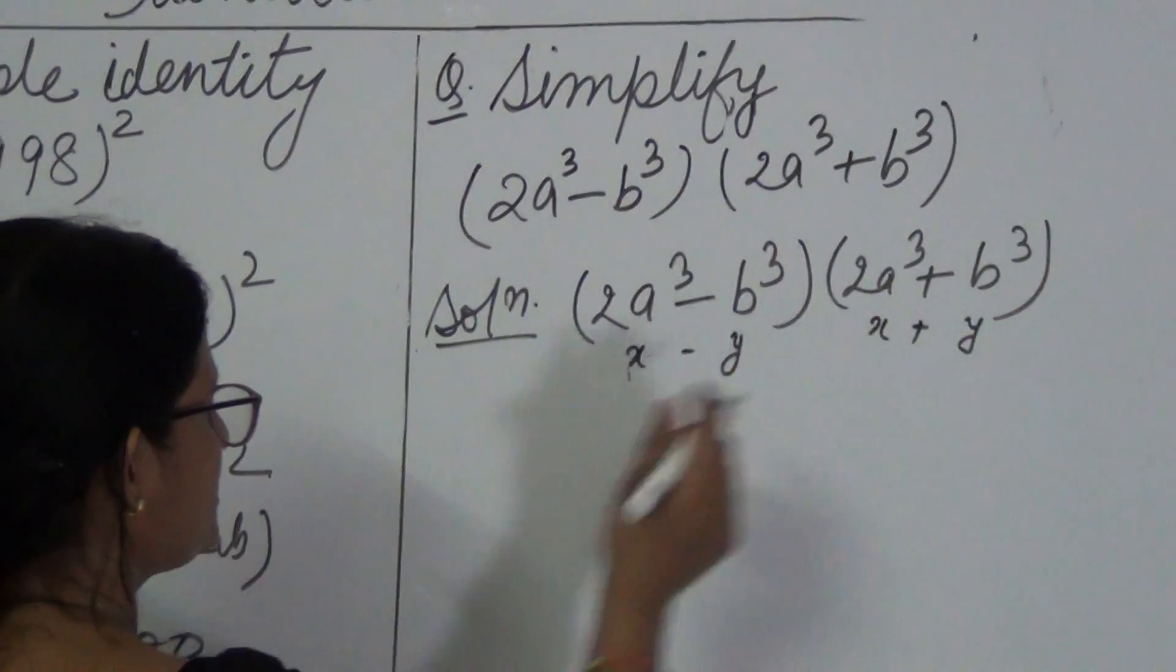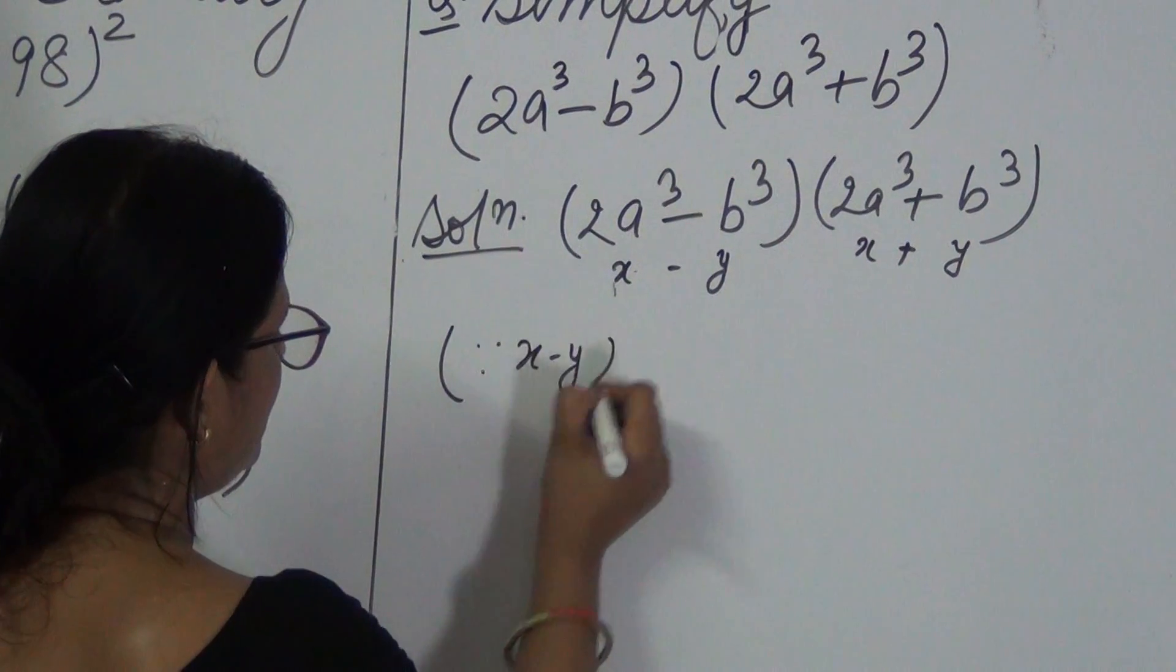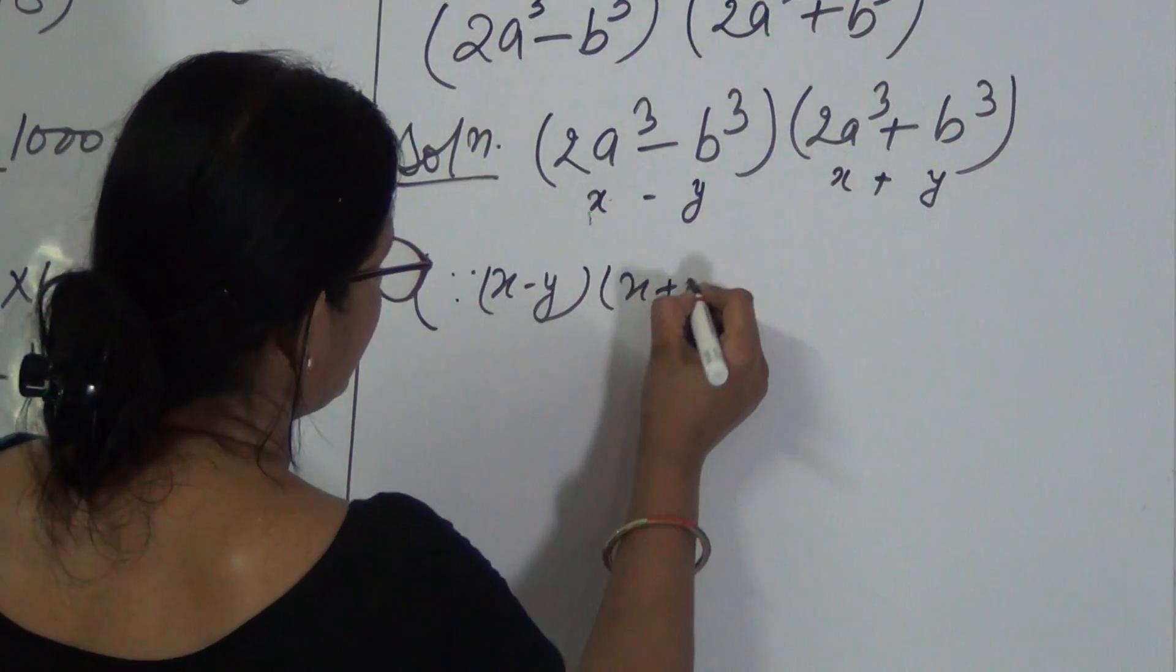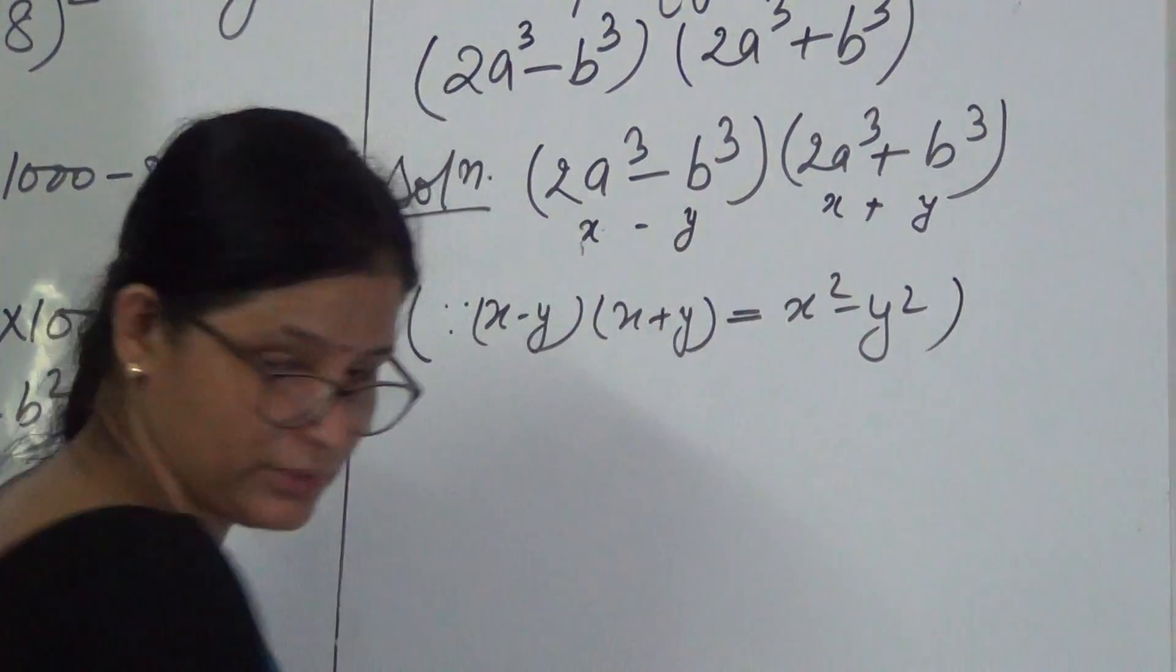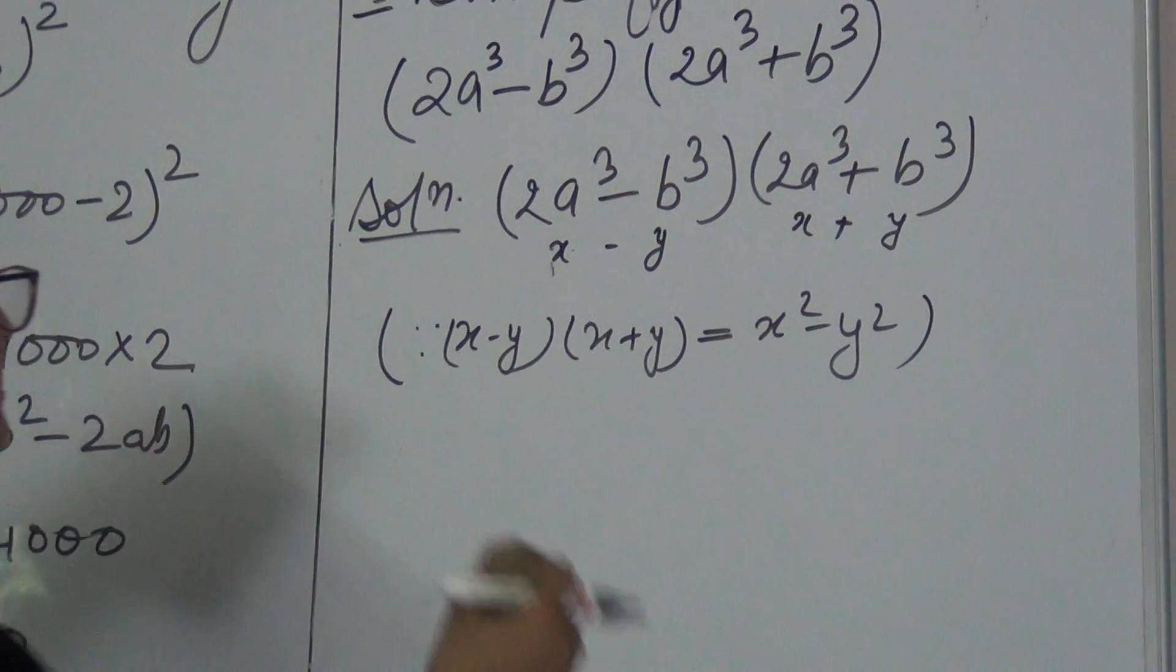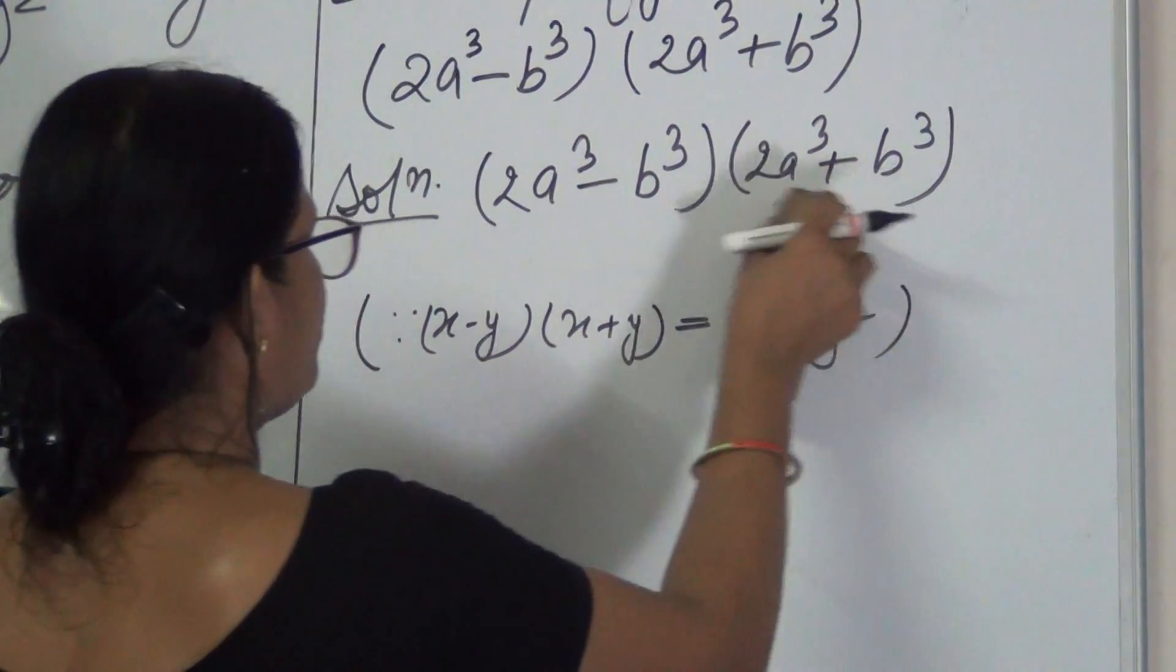This identity can be used here since X minus Y into X plus Y is equal to X square minus Y square. There is no need to write this XY, just to make you understand I have written. We are not going to write it.